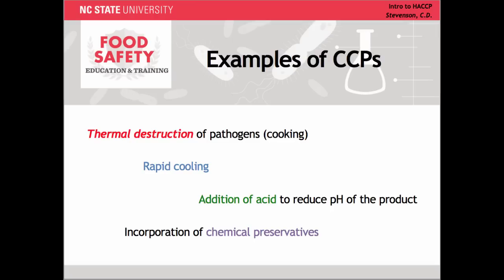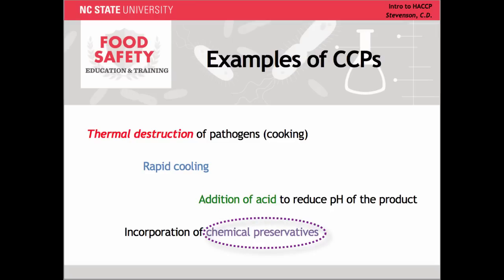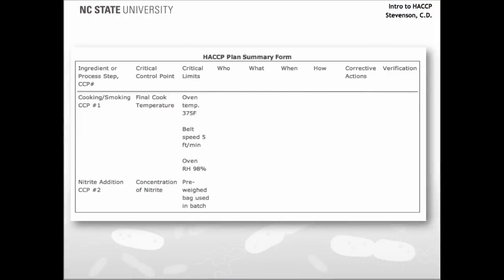Other CCPs may be similarly effective, such as the addition of acid to reduce the pH or the incorporation of chemical preservatives. The choice of critical control points is recorded on the HACCP plan summary form for clear presentation. As with the hazard analysis summary form, factors for making decisions should be documented and maintained with the plan summary.